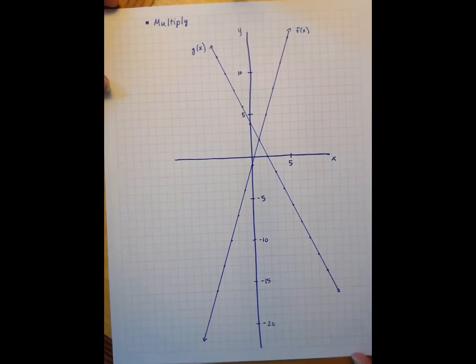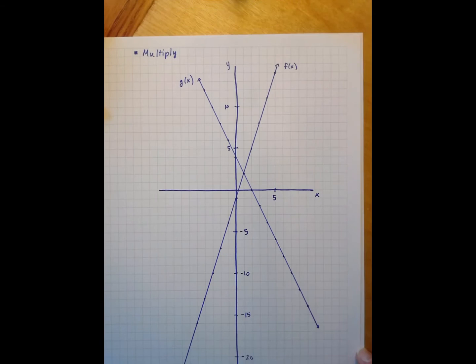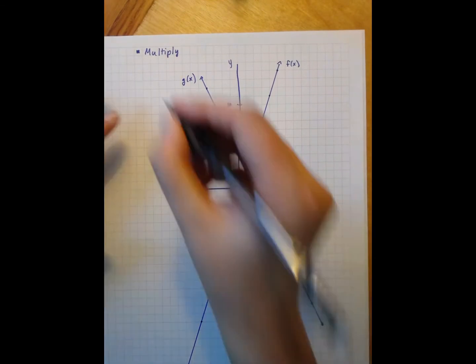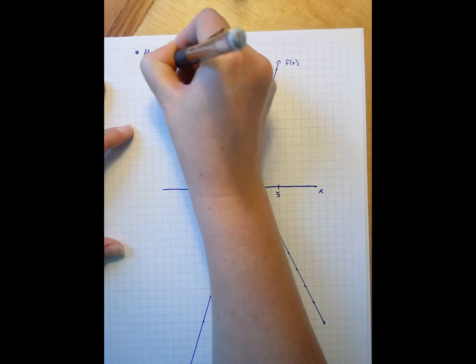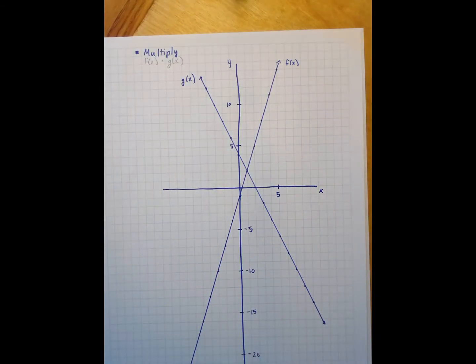The last one we're going to do is multiplying the functions. Now, you'll notice that I made my graph here really big. And I did this because when I multiply f of x times g of x, I should expect to get a quadratic shape. I have a linear, in this case I have a linear times a linear, which should give me quadratic. And I really want enough room to see that picture fully.